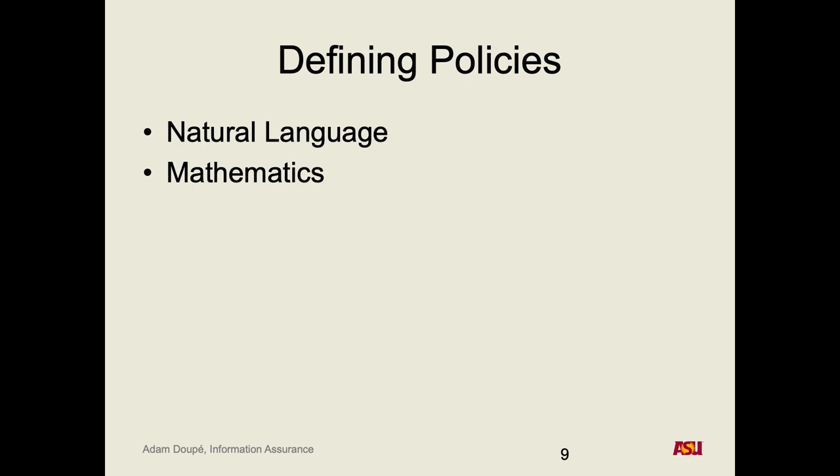Would you want to do that for something as complicated as ASU's computer use policy? The difference between the two is complexity, scope, and scale. How do you represent a mathematical notation when every year a quarter of your network is new students? In most corporations you don't have a turnover rate of a quarter a year, but here you have students graduating and new freshmen coming in who are now on your network.